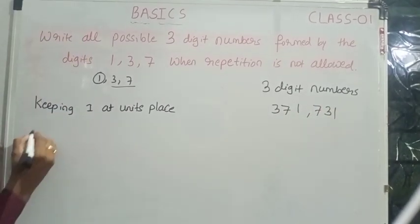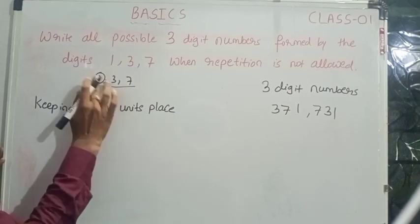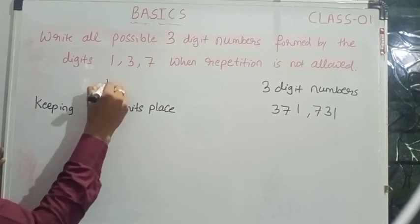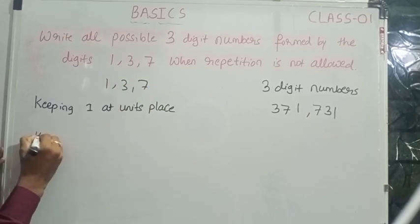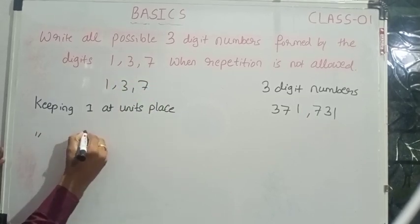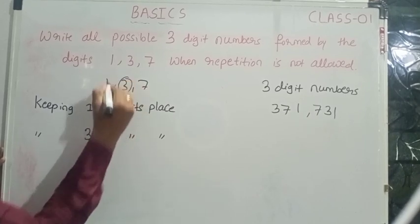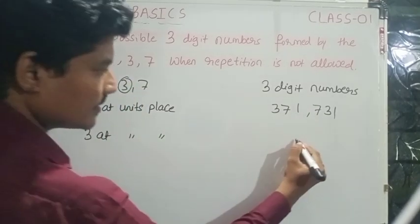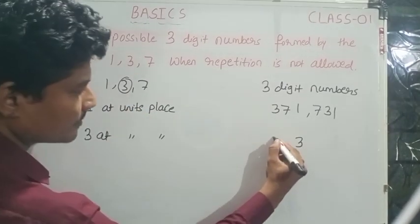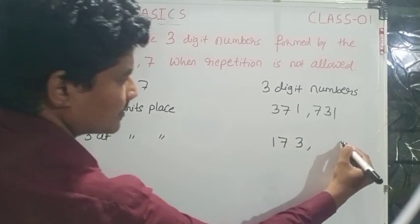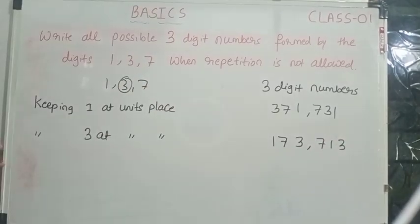Similarly, keeping 3 at the unit's place, we will get 2 possible numbers: 173 and 713.